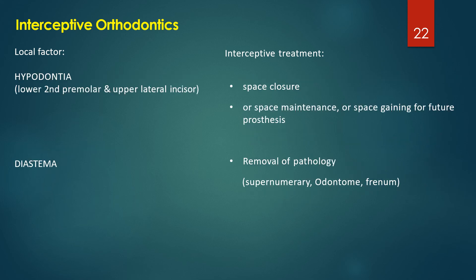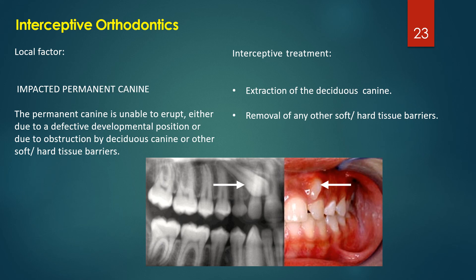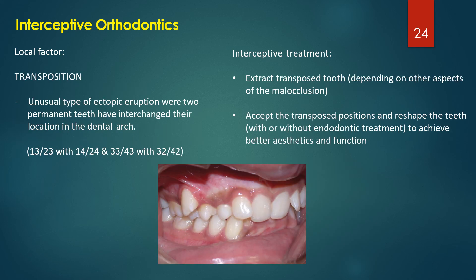For hypodontia, the commonly missing teeth are the second premolars and upper lateral incisors. Treatment involves closing the space or maintaining it to allow provision of a prosthesis. If a diastema is present, removal of pathology — such as a supernumerary tooth, odontome, or a frenum extending beyond the mucogingival junction toward the incisive papilla — can help. For an impacted permanent canine, extract the deciduous canine and remove any soft tissue or hard tissue barriers to facilitate eruption.